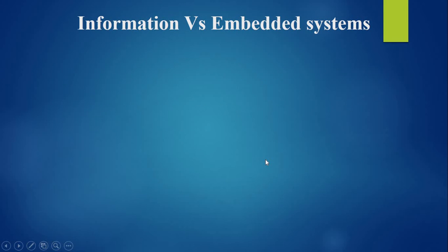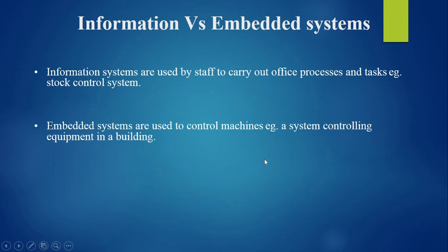The second category is information versus embedded systems. Information systems are used by staff to carry out office processes and tasks — for example, a stock control system. Embedded systems are used to control machines — for example, a system controlling equipment in a building. A traditional distinction has been between information systems, which enable staff to carry out office processes, and embedded systems, which control machines.